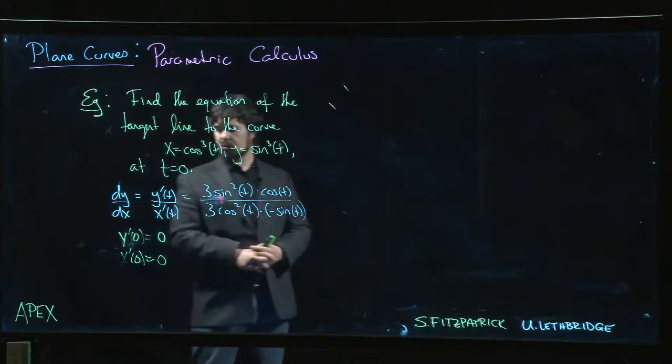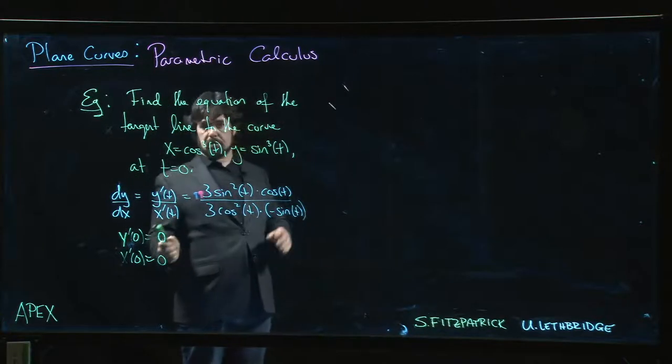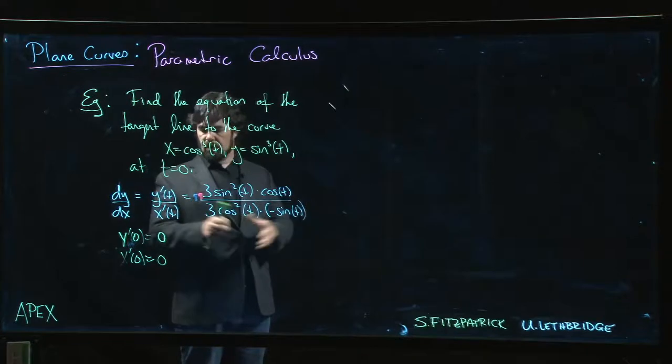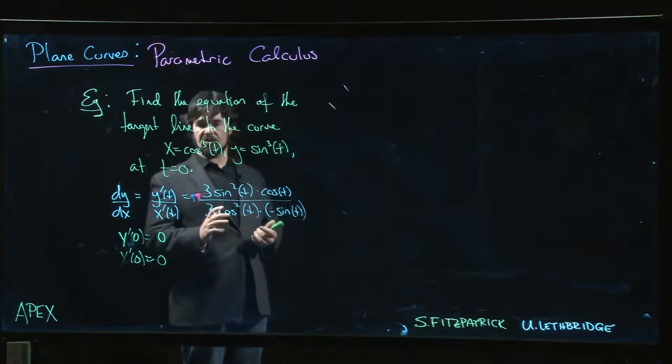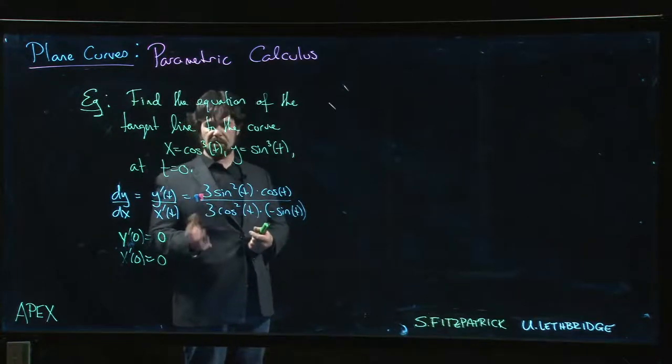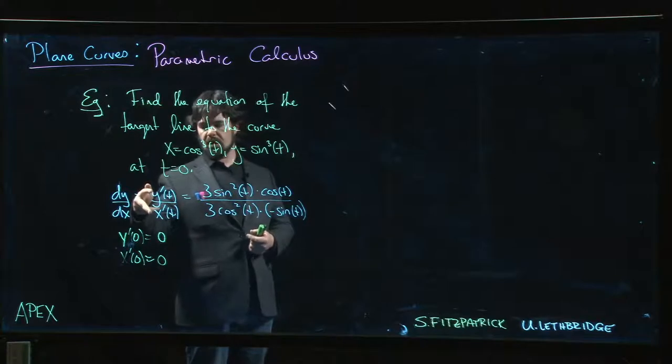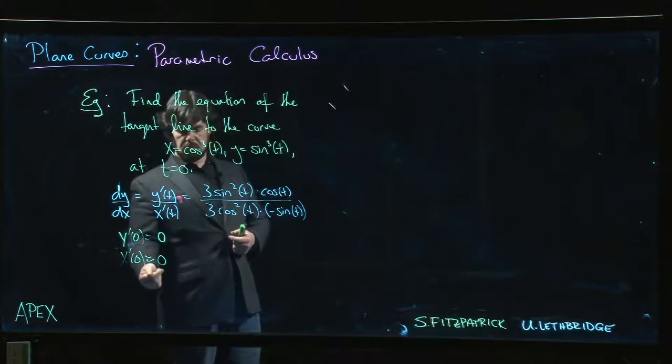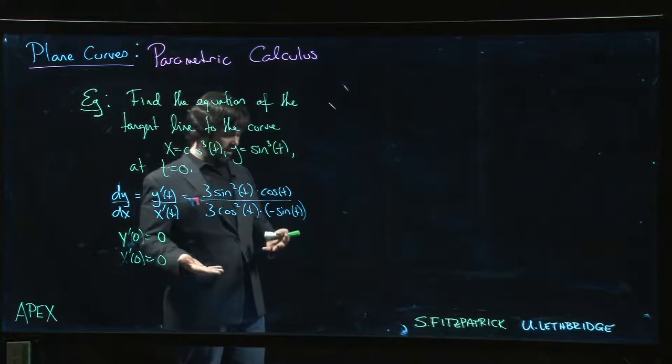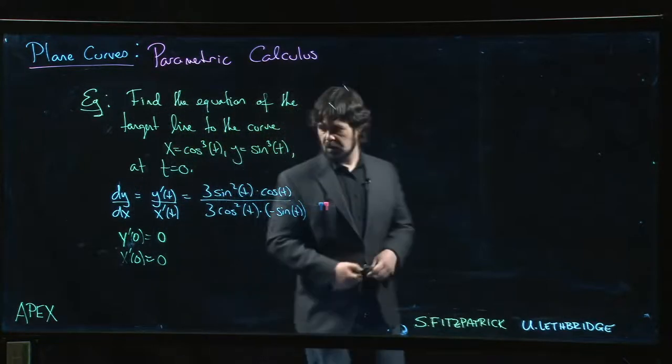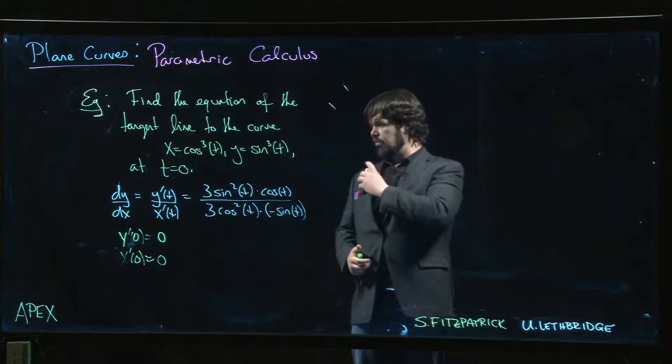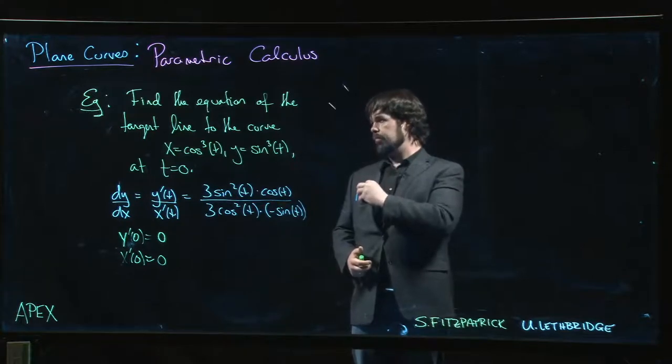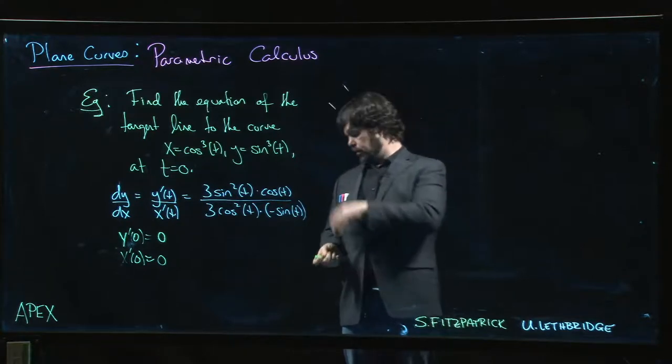The other thing to keep in mind is to remember that we said the definition of a smooth curve is that a curve is smooth as long as we stay away from points where either these derivatives are undefined or where they are simultaneously equal to zero. Here's a place where they're simultaneously equal to zero, so maybe we should be concerned about that.